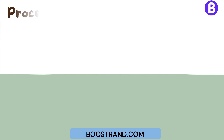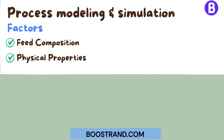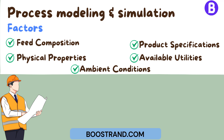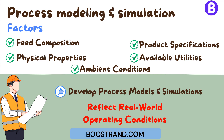Process modeling and simulation require process engineers to consider several factors, such as feed composition and physical properties, product specifications, available utilities, and ambient conditions. By accounting for these factors, process engineers can develop accurate and reliable process models and simulations that reflect the real-world operating conditions of the plant.